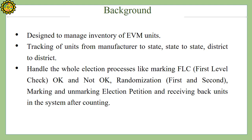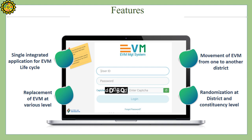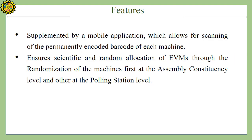EMS is designed to manage the inventory of EVM units. It tracks units from manufacturer to state, state to state, and district to district. It handles the whole election process including marking of FLC as OK or not OK, randomization, marking and unmarking of election petitions, and receiving back units after counting. The EMS dashboard is supplemented by a mobile application which allows scanning of the permanently encoded barcode of each machine, ensuring scientific and random allocation of EVMs — first at the AC level and then at the polling station level.